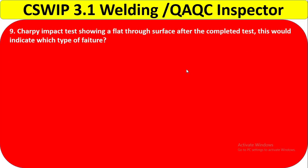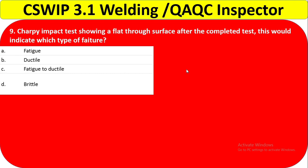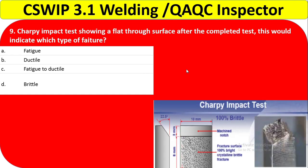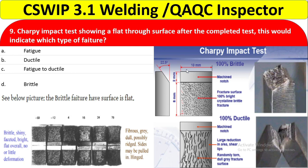Question 9: A Charpy impact test shows a fully flat surface after the completed test. This indicates which type of failure? A flat surface definitively indicates brittle failure. The answer is D — brittle failure. You should know that a flat surface on a Charpy specimen indicates brittle failure, and you can see from the Charpy impact test machine and specimen how brittle failure looks.